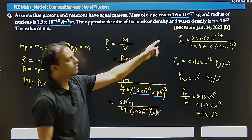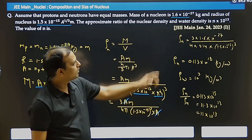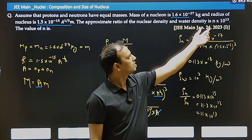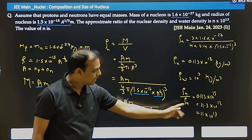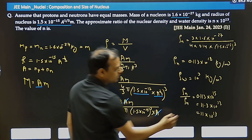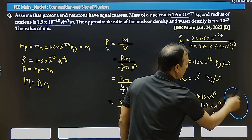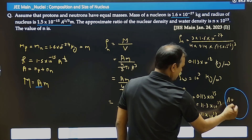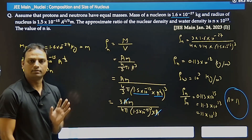Your value of N will be determined from the ratio of densities expressed as N×10¹³. The result is 11×10¹³, so the value of N is 11.